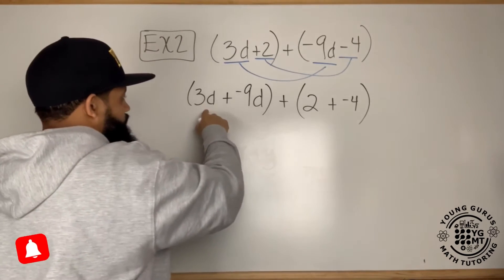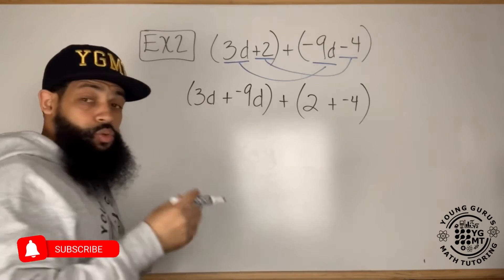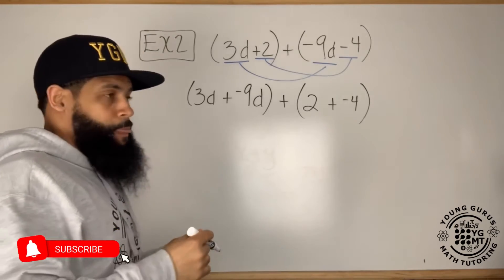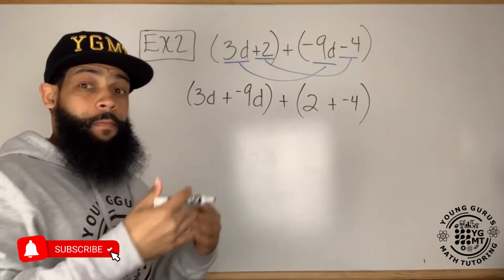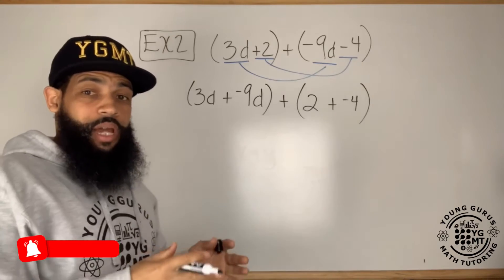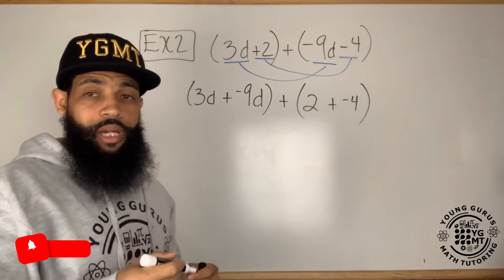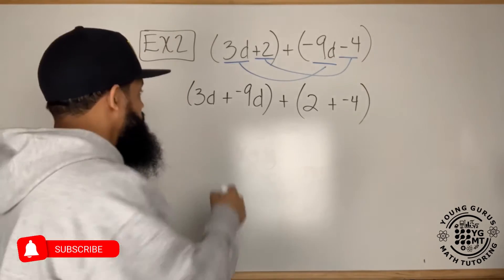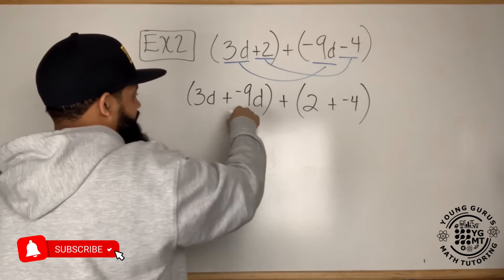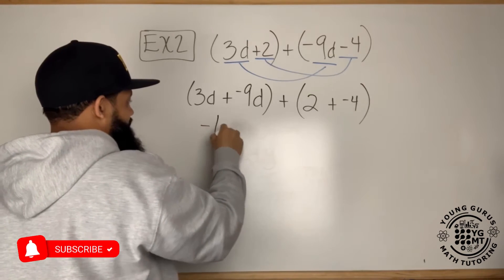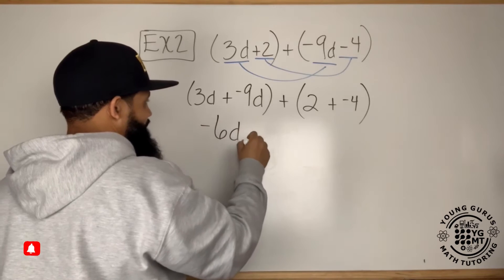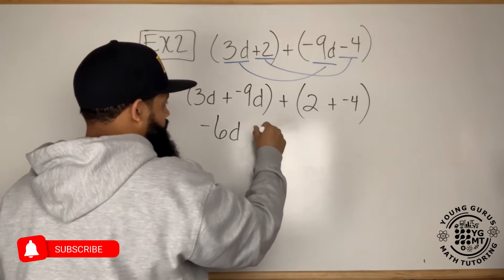So if I have 3d plus negative 9d, 3 plus negative 9 is actually the same thing as 3 minus 9, because subtraction is, by definition, adding the opposite of a number. So 3 plus negative 9 is negative 6, and I'm going to keep my d.